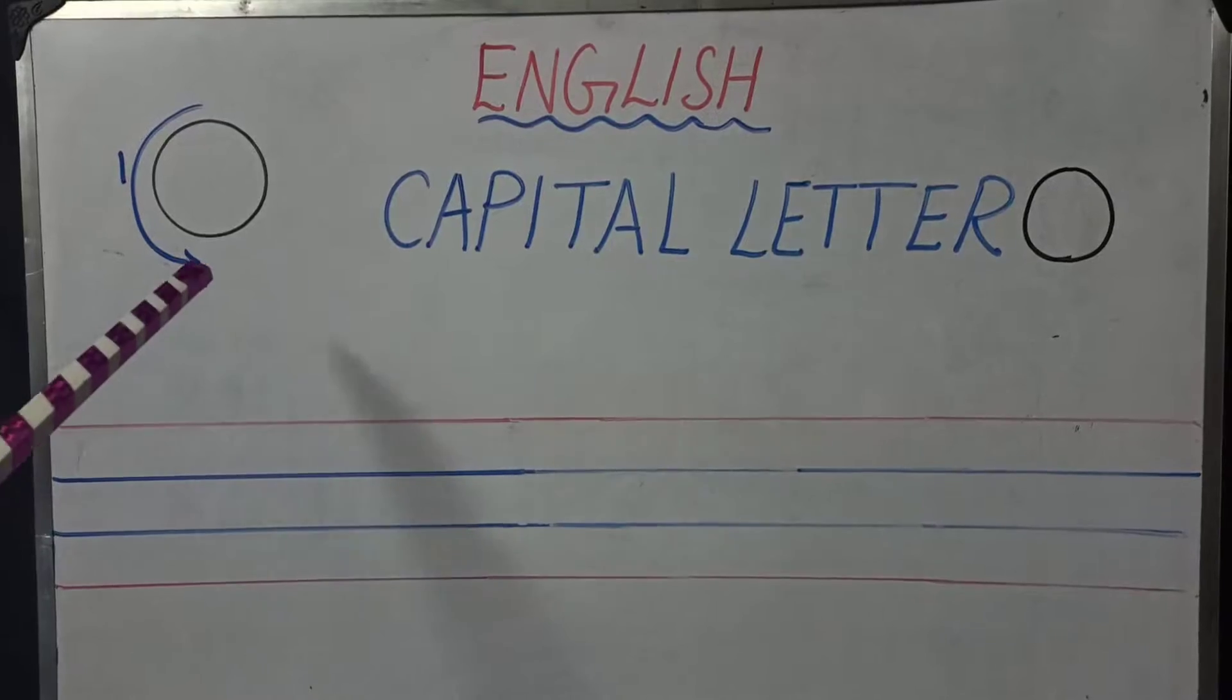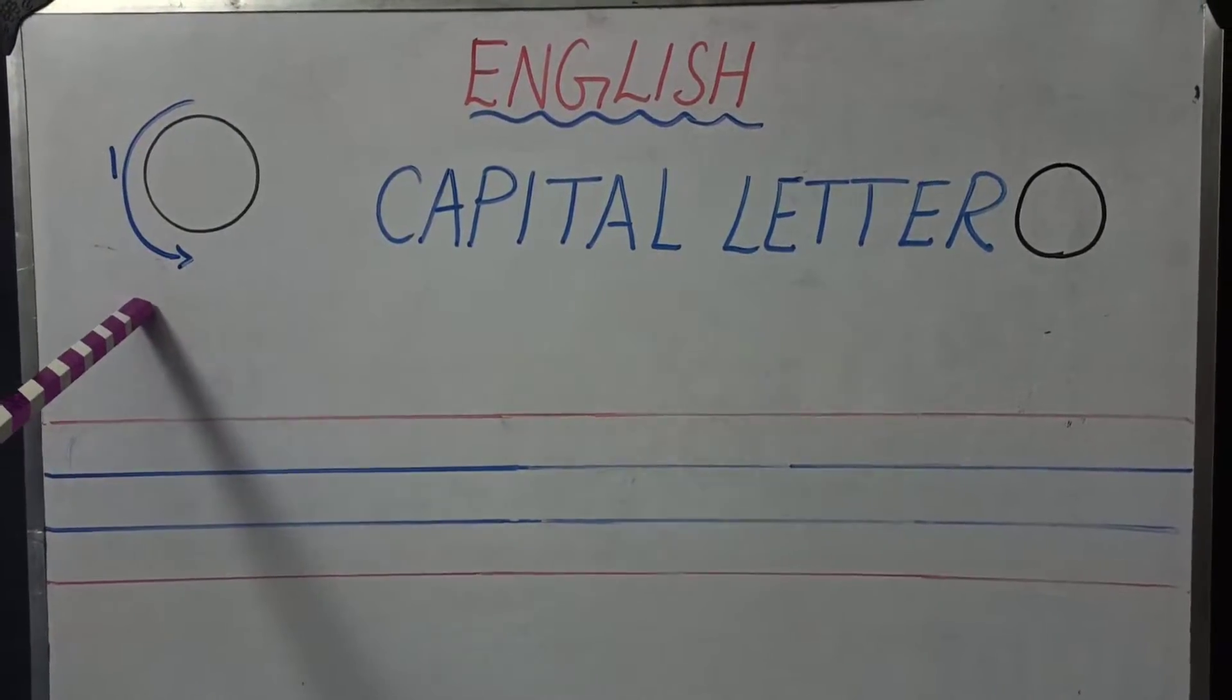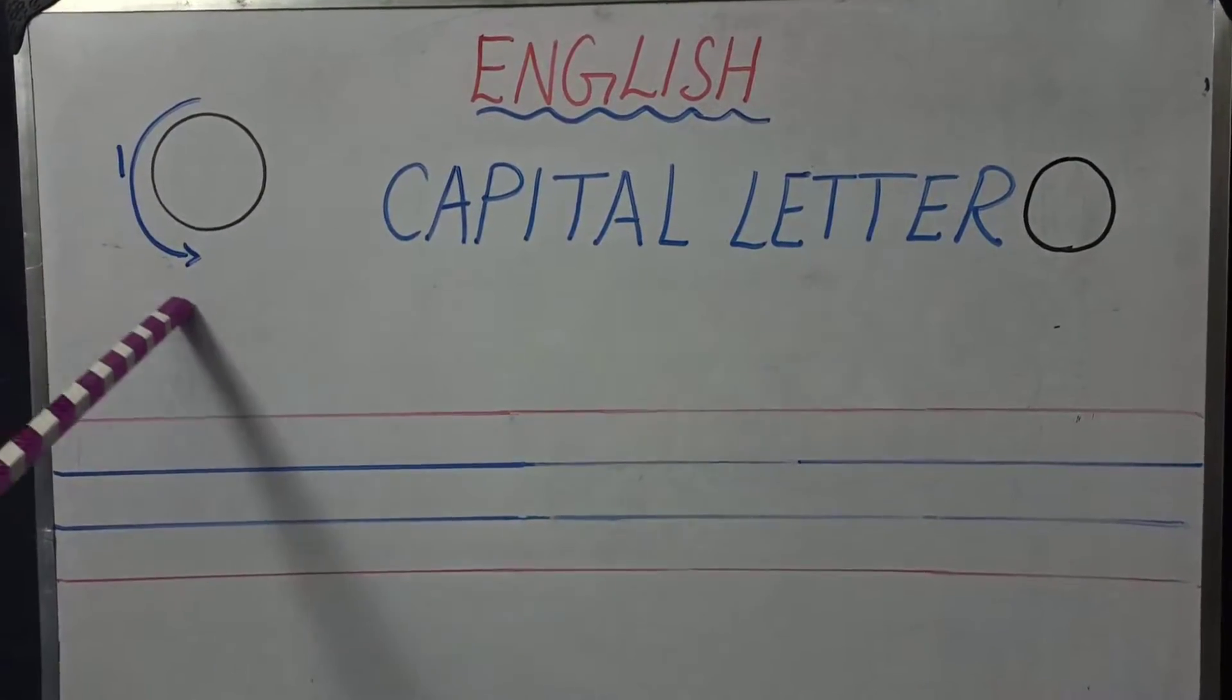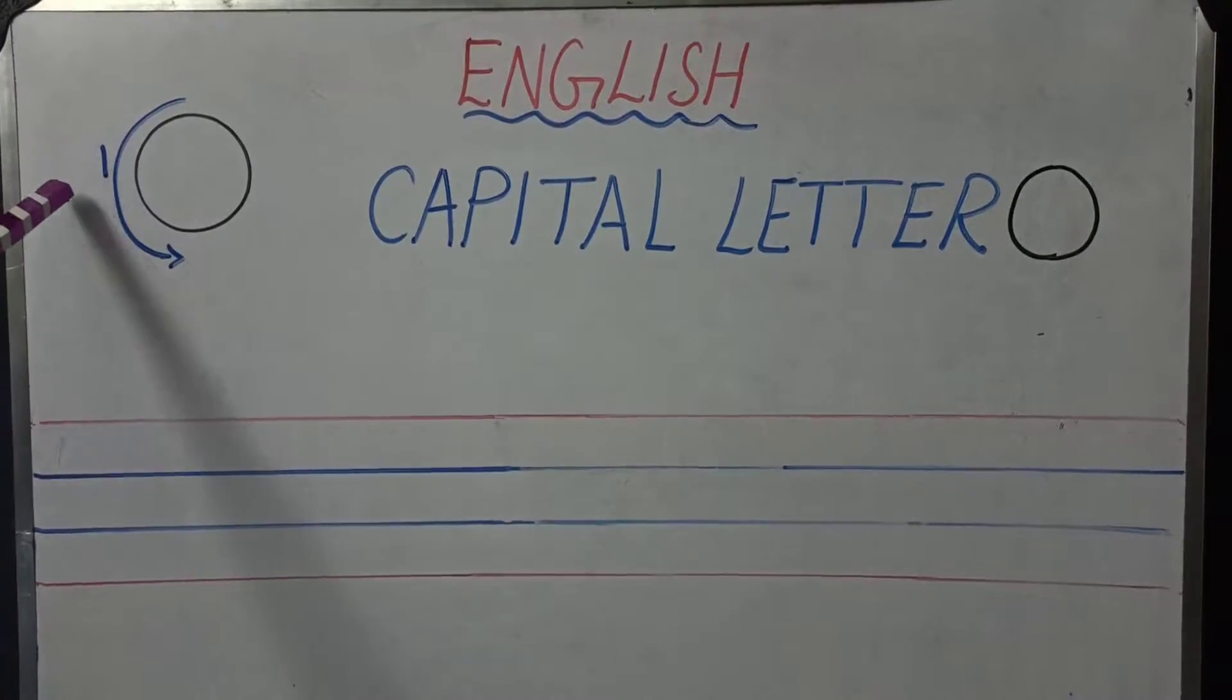Let's see the formation first. Here we have capital letter O formation. We have only one formation children. How many formations? Only one.